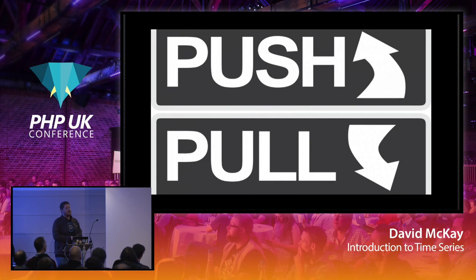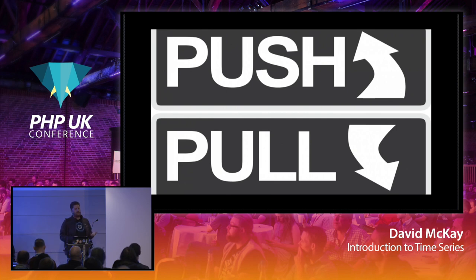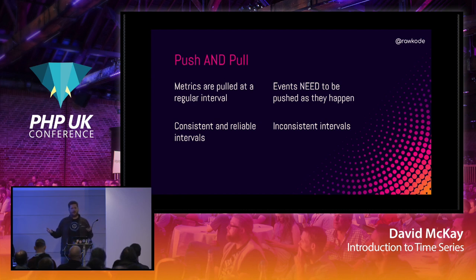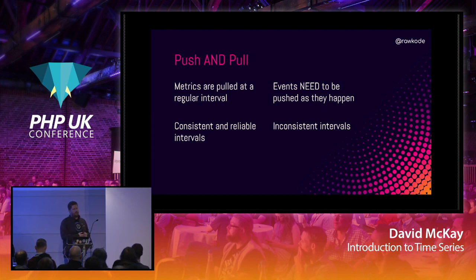There's a bit of a dogmatic war in the time series world: should you pull or push your data? Prometheus goes with always pull. InfluxDB supports both, and the reason is you really do need both. For metrics, you can pull at a regular predictable interval — the value will always be there. But for events at unpredictable intervals, you cannot pull — you don't know when they'll happen. For those you need a push approach, instrumenting your code to push those events to a TSDB. There's not one right way — you have to adopt both.